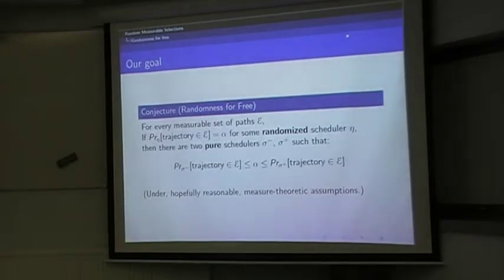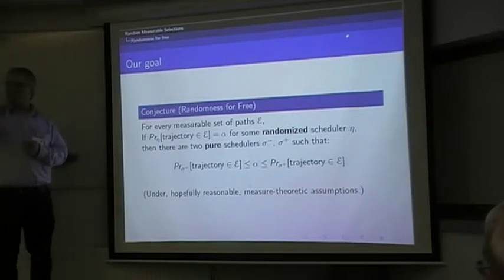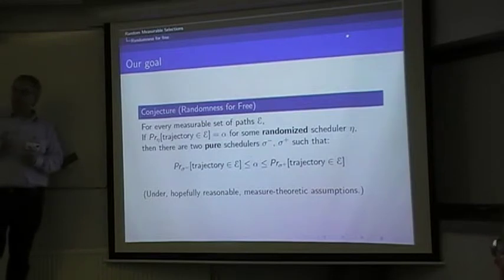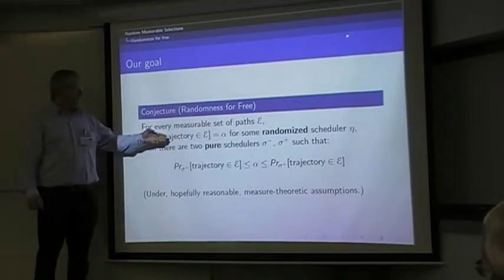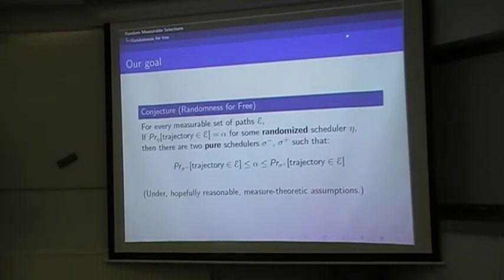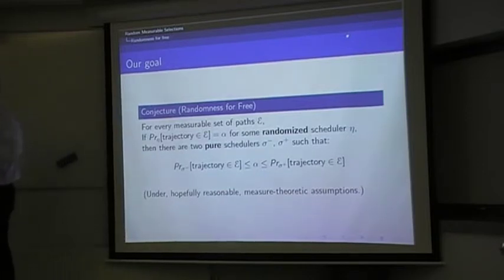This is actually what we were trying to prove. This is essentially what Chatterjee, Doyen, Gimbert, and Henzinger called randomness for free. It says, imagine you have a randomized scheduler eta, and given that eta, the probability that running a trajectory along this scheduler, using this scheduler, so you make random choices every time, it doesn't give you a unique trajectory, it gives you a distribution over the trajectories. And the probability that your trajectory will fall into some prescribed measurable set of paths can be bounded by similar probabilities given by two pure schedulers. So for now, it's just a conjecture.